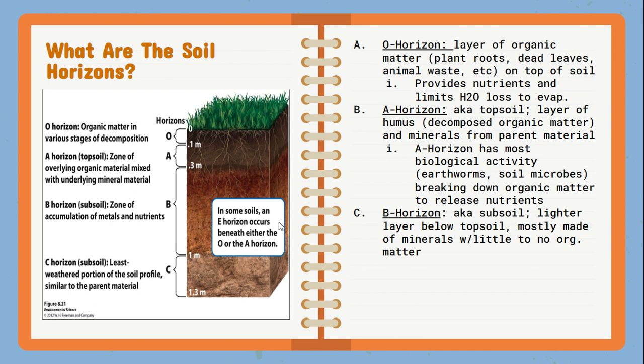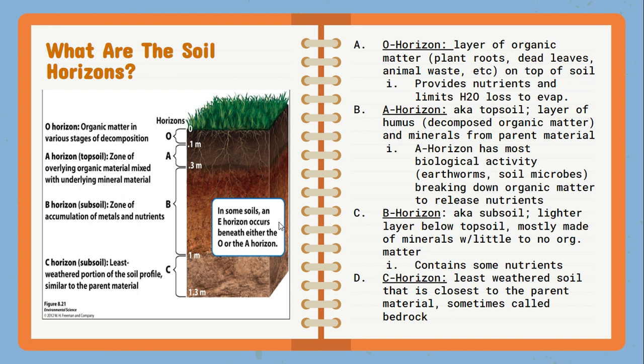The B-horizon is the subsoil, mostly made of minerals, containing some nutrients. Towards the bottom, we get the C-horizon — this is the least weathered soil, closest to what the parent material would be. Going below the C-horizon, you would get what's known as the R-horizon, and that is the actual bedrock itself.